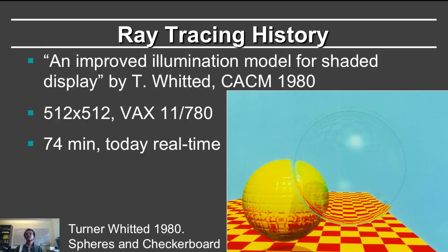These images were rendered at 512×512 on a VAX of those days, and at that time it took an hour and 14 minutes. Today in software, if you write homework 3 and develop this ray tracer, it should be a good deal faster than an hour and 14 minutes. If you plug it into the NVIDIA Optix ray tracer, you will actually be able to do this same scene in real time.